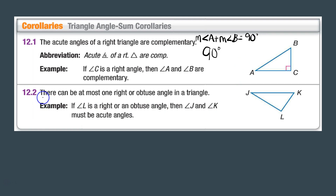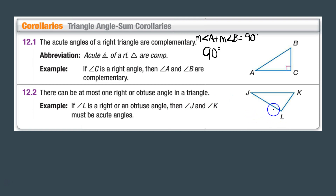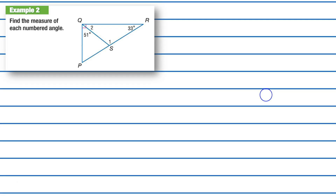Next, we know that there can be at most one right or obtuse angle in a triangle. For example, if angle L is right or obtuse, then angles J and K must both be acute angles.